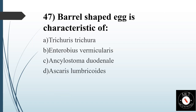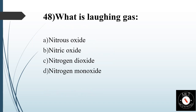Forty-seventh question. Barrel-shaped egg is characteristic of? Option A: Trichuris trichura. Option B: Enterobius vermicularis. Option C: Ancylostoma duodenale. Option D: Ascaris lumbricoides. Answer is Option A: Trichuris trichura.